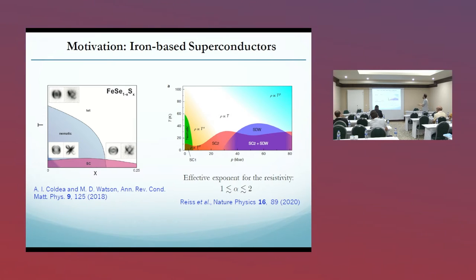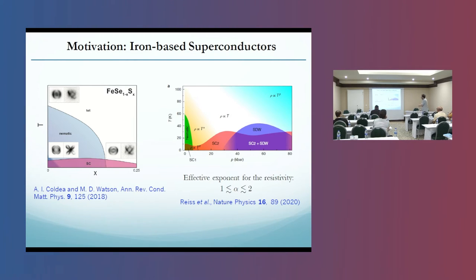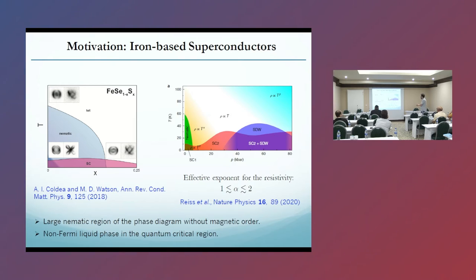Here I show you two phase diagrams, for instance of iron selenide — here as a function of temperature and doping, and here temperature as a function of pressure. As you see, there is a very large nematic region of the phase diagram without magnetic order.